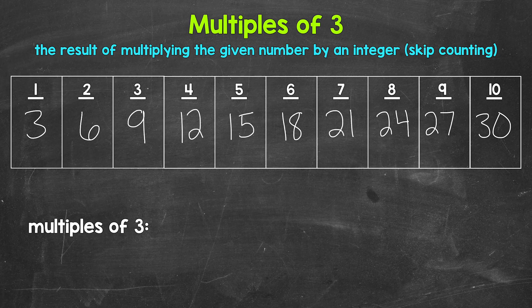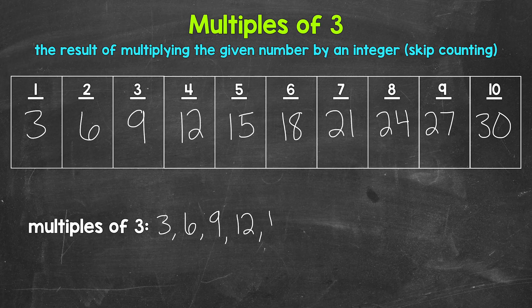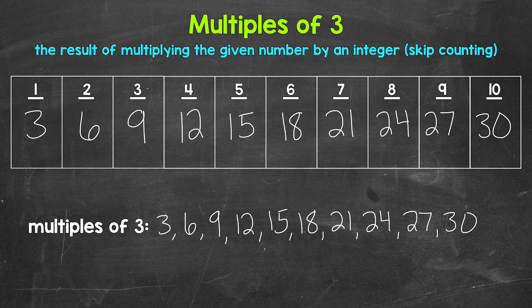Now let's write these multiples in a list below. You'll notice we are just counting up by 3. Like I mentioned earlier, another way to think about multiples is to skip count. So 3, 6, 9, 12, 15, 18, 21, 24, 27, 30, and these continue on.